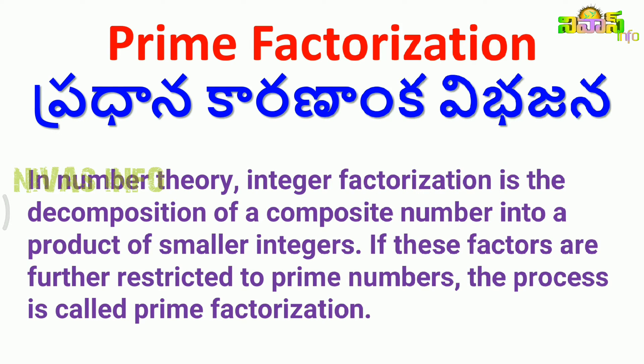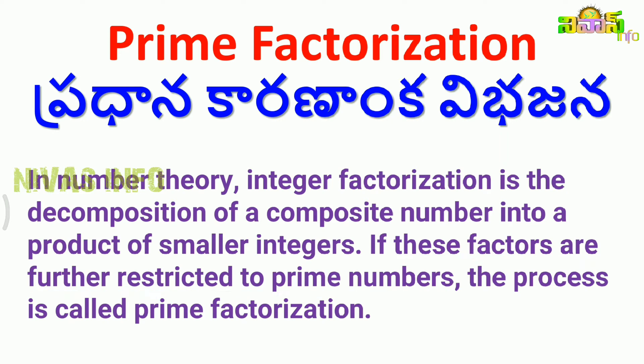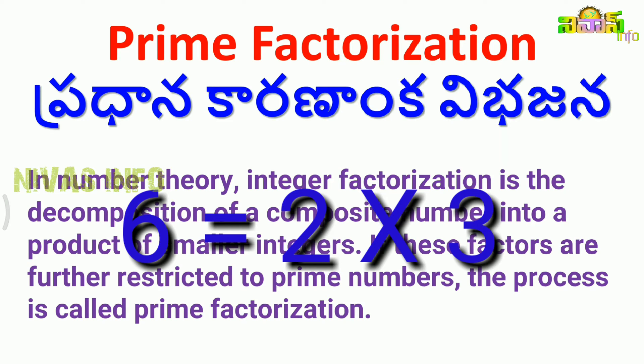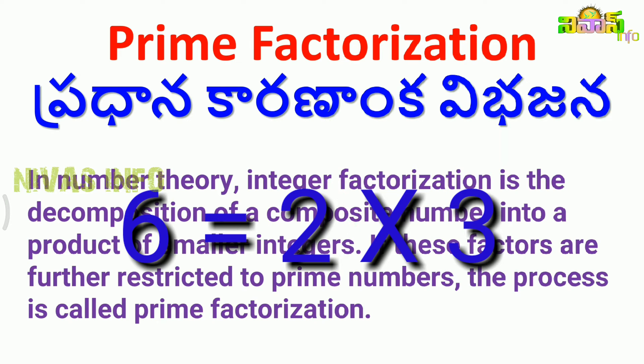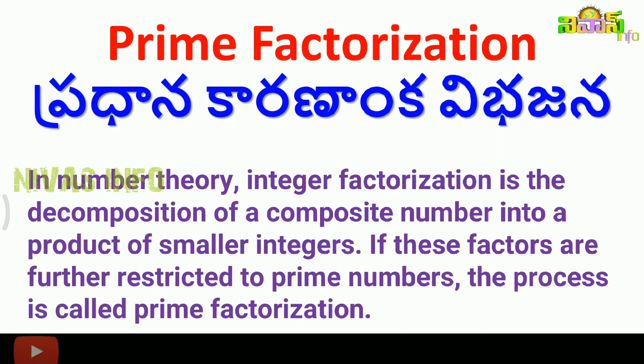What is prime factorization? There is a small restriction here. In this process, we do multiplication of numbers, and all factors must be prime numbers. For example, take 60. Finding the factors of 60 — the decomposition gives us 2 and 3, which are prime numbers. So when all factors are prime numbers, the name is prime factorization.